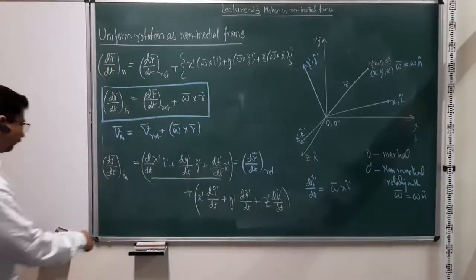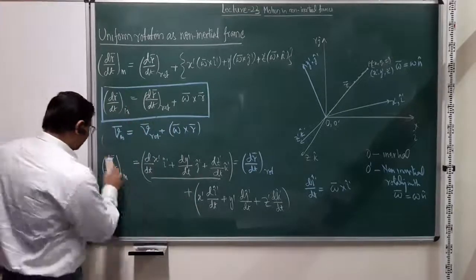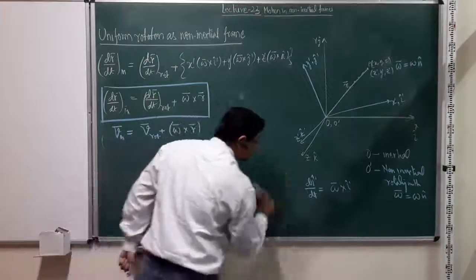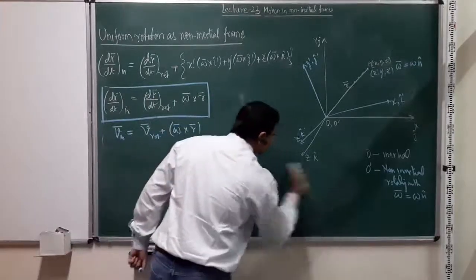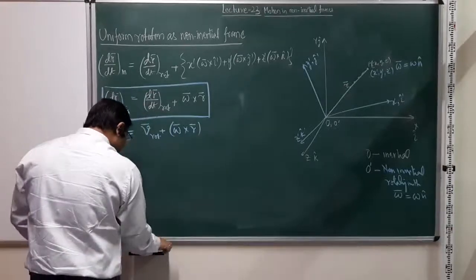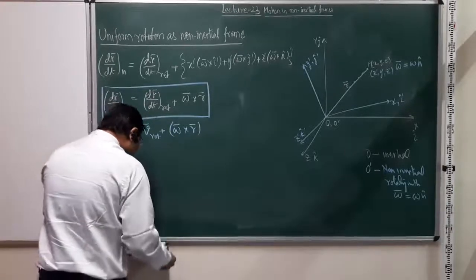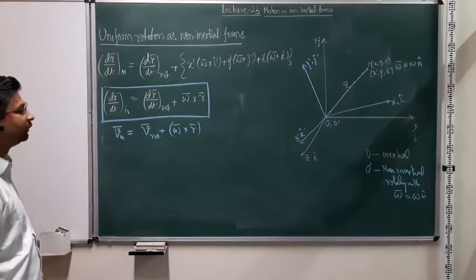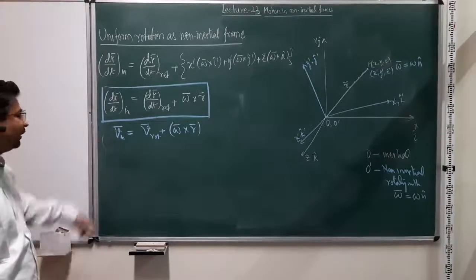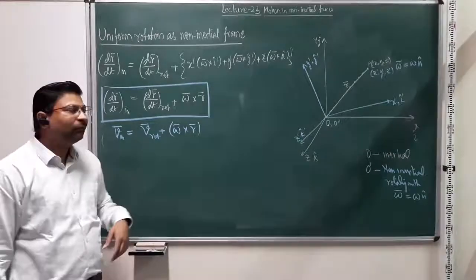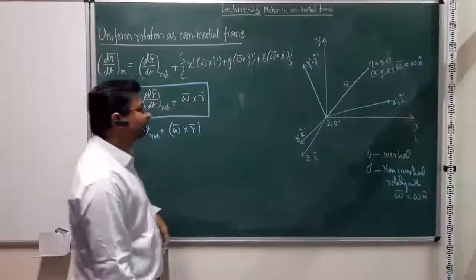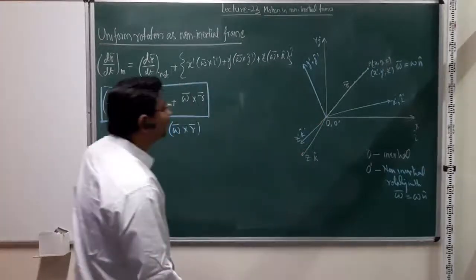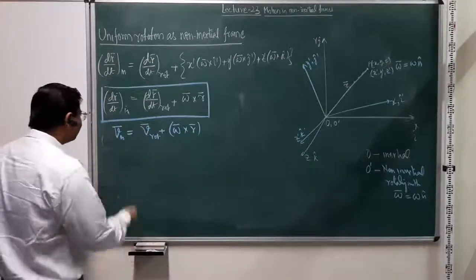So we have v_inertial = v_rotation + ω × r. Now we can extend this one step further to get the expression for acceleration, and from acceleration we can find out what kinds of forces are present in an inertial system and in a rotational system.